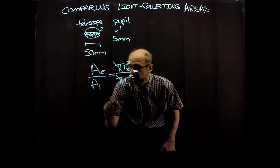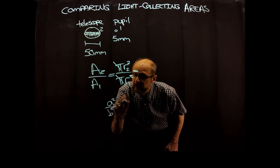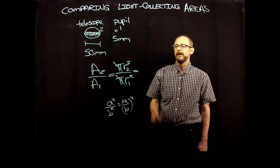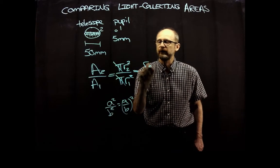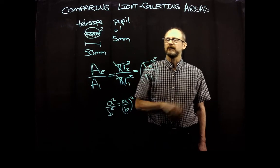Now, from algebra, you've probably seen a squared over b squared is equal to a over b quantity squared. So I can write this as r2 over r1 quantity squared.